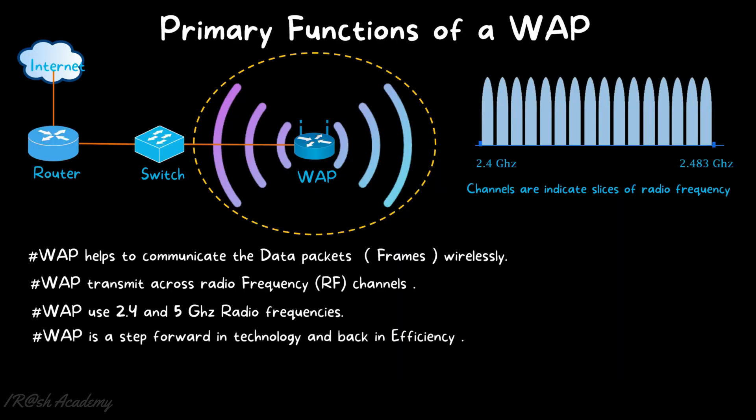Point number four: a wireless access point is a step forward in technology but back in efficiency. The invention of the wireless access point made a very big impact on network communication — we could use network communication wirelessly without any cable, which advanced the technology. But it is back in efficiency, because there is a lot of difference between communication in a network switch versus through a wireless access point.